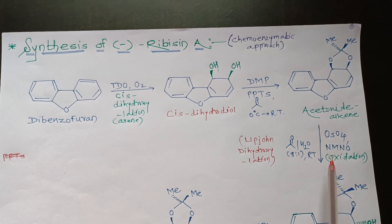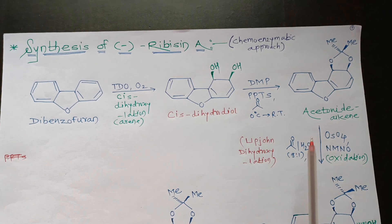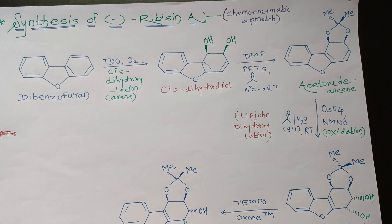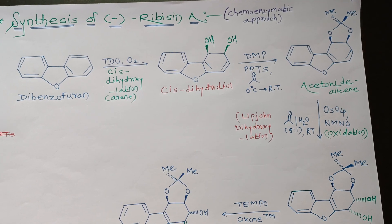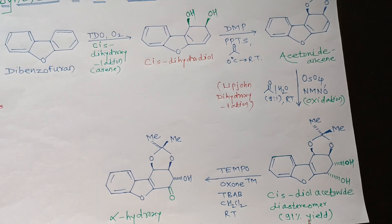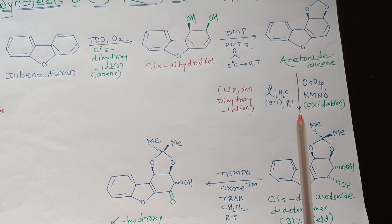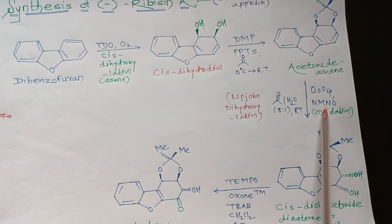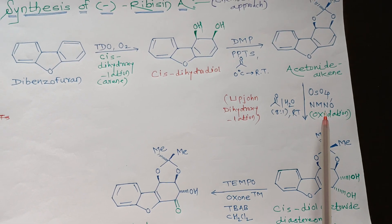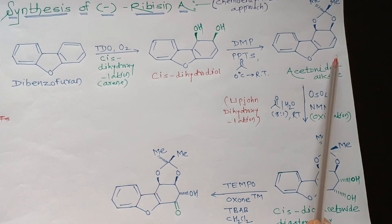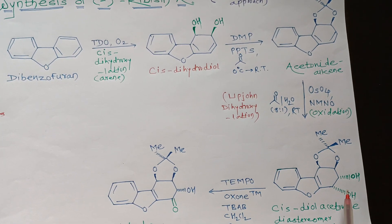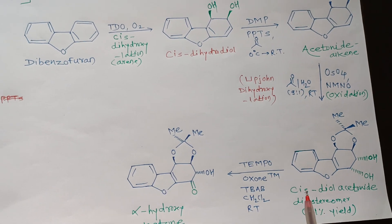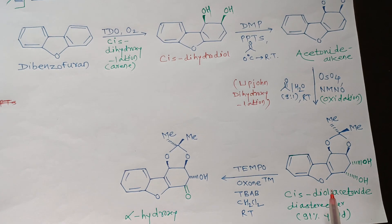In the next step, the acetonide alkene intermediate undergoes dihydroxylation using osmium tetroxide in the presence of NMO as a stoichiometric reoxidant for osmium tetroxide. This converts the double bond into a cis-diol acetonide as a diastereomeric mixture. This isomer is obtained in 91% yield. NMO is N-methylmorpholine N-oxide.